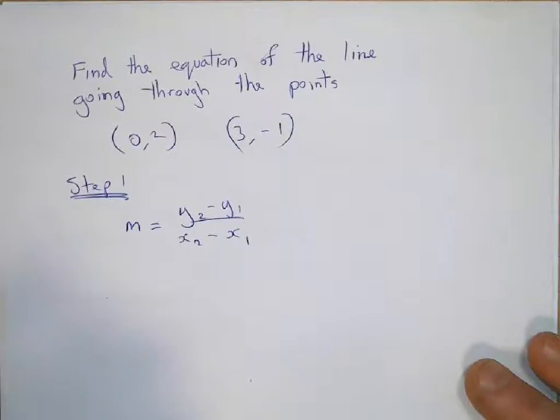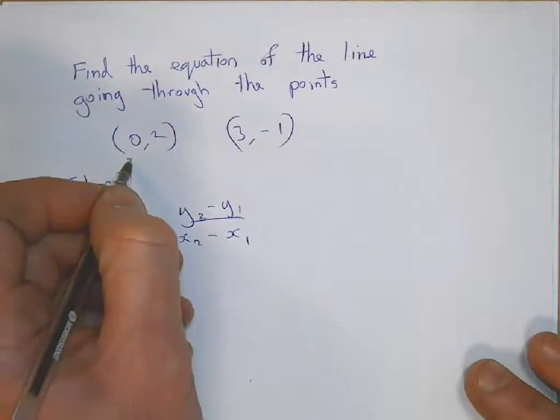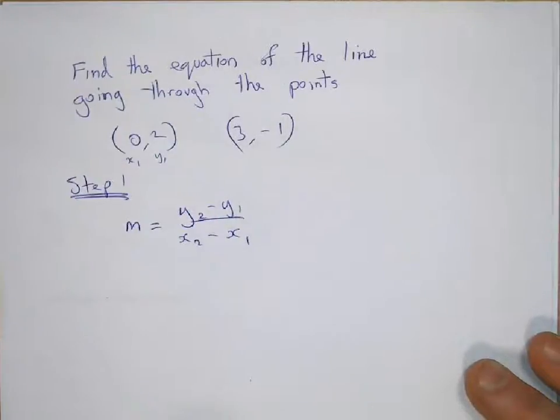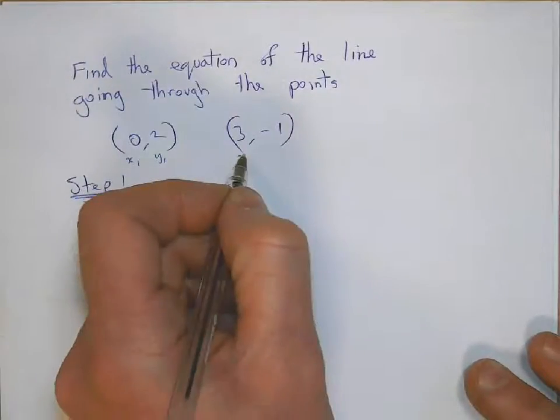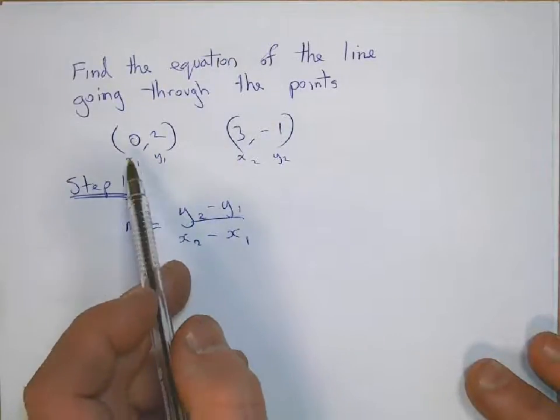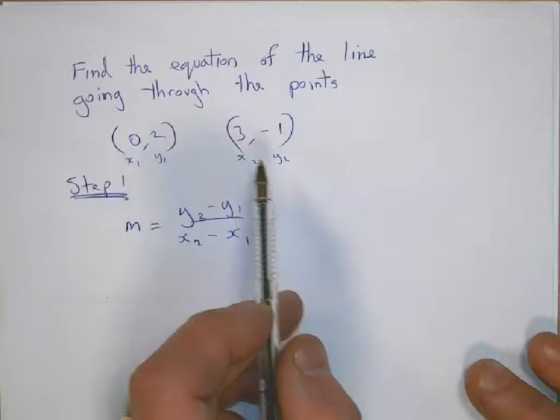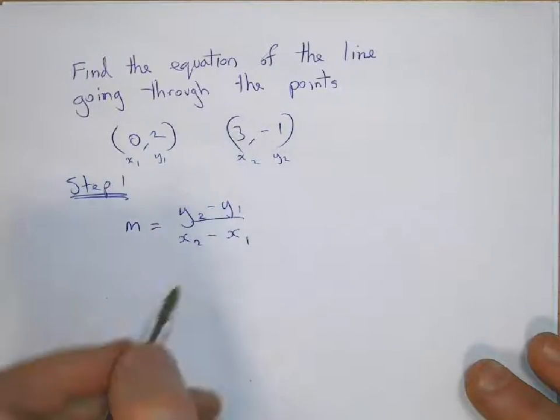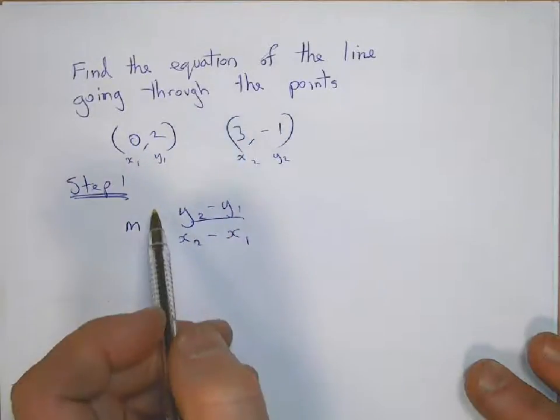So you want to label the coordinates up at the top as x1, y1 and x2, y2. It does not matter which way around you put those. You could label this x2 and y2 and this one here x1 and y1. It does not matter. We put those numbers into this formula.